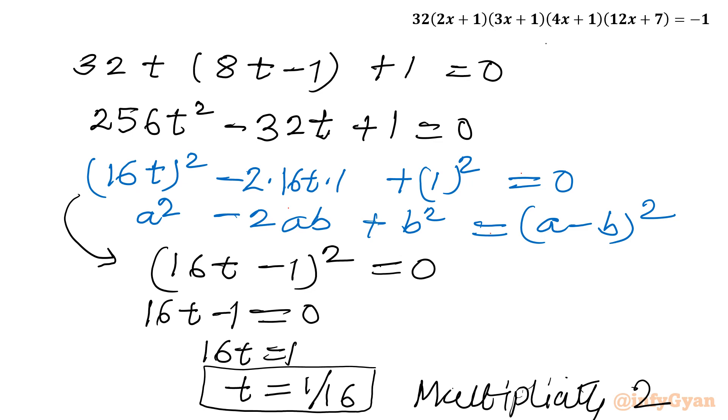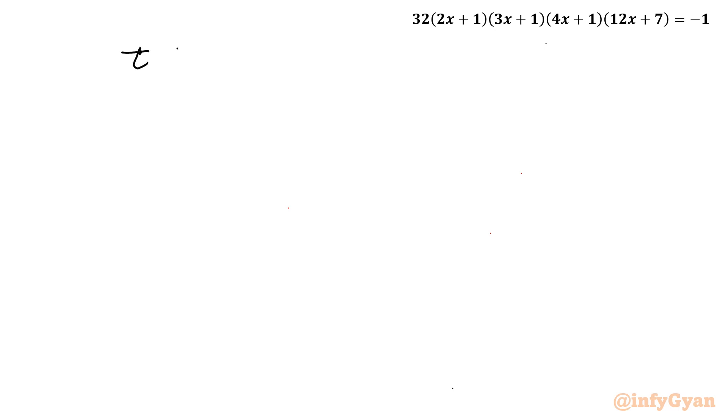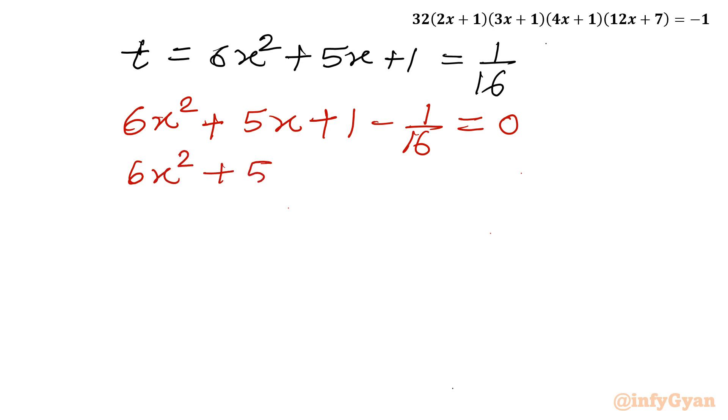Now t is 1 over 16. So let us put this value as per our substitution. Our substitution was t equals 6x squared plus 5x plus 1, and this value is 1 over 16. Now we have to solve for the value of x. I will consider 1 over 16 to the left. So 6x squared plus 5x plus 1 minus 1 over 16 equal to 0. So I can write this one as 16 over 16. So 6x squared plus 5x, 16 over 16 then 16 minus 1, so it will become 15 over 16 equal to 0.